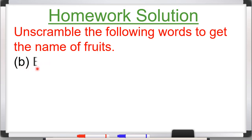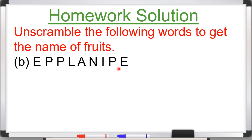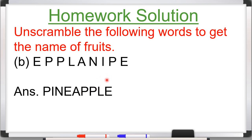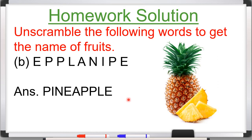Part B: E-P-P-L-A-N-I-P-E. These alphabets are given in jumbled form. You have to arrange them correctly to form a fruit name. Can anybody tell? The answer is Pineapple — P-I-N-E-A-P-P-L-E. The correct answer is Pineapple. See the picture of pineapple.